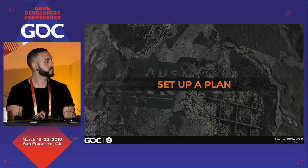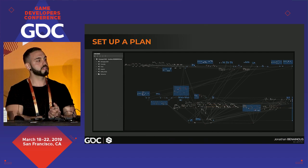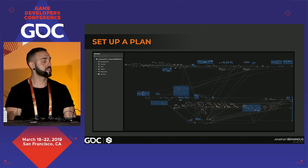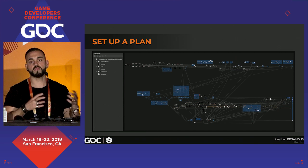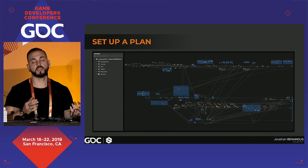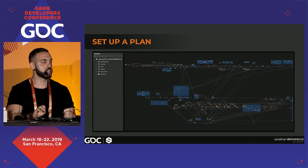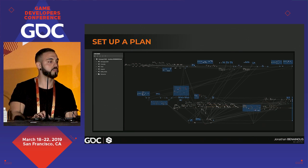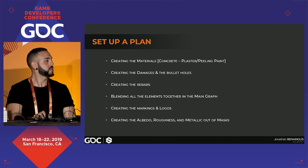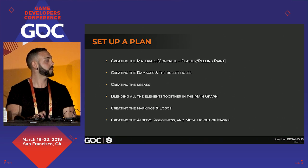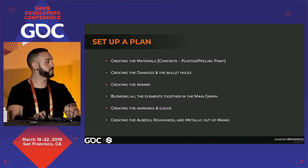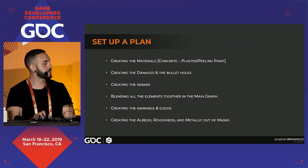Setting up a plan: I separated all elements into separate graphs to stay organized. This time the height is made out of five subgraphs. My main steps are: creating the materials — concrete, plaster, peeling paint; creating the damages and bullet holes; creating the rebars; blending all elements in the main graph; creating the markings and logos; and finally creating the albedo, roughness, and metallic out of masks.